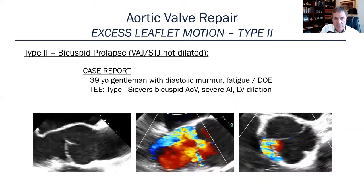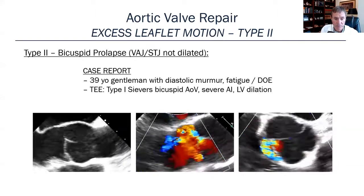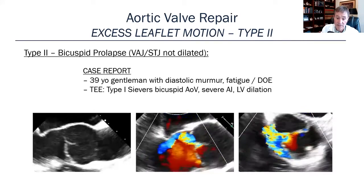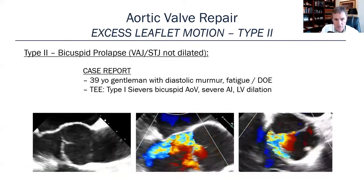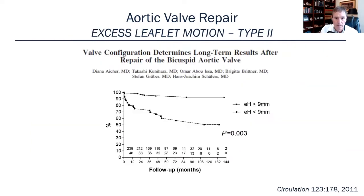Here's a bicuspid prolapse case where the aortic annulus and sinotubular junction were not dilated — this was only a valvular problem. You can see the prolapse of the leaflets and the very severe eccentric jet of aortic regurgitation in this 39-year-old gentleman. The Sievers classification: type 0 has no raphe, just two leaflets; type 1 has a raphe with conjoined leaflets; and type 2 is essentially a unicuspid valve. Schäfers reported that in aortic repair alone, similar to valve-sparing root replacement, effective height was important to prevent recurrence.